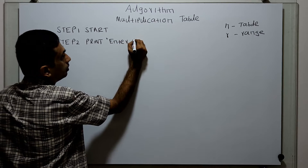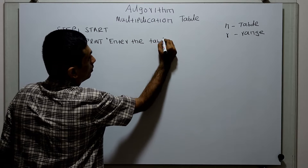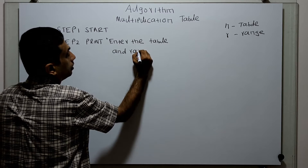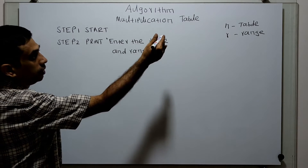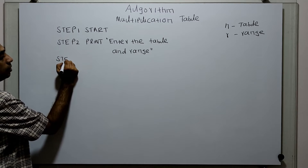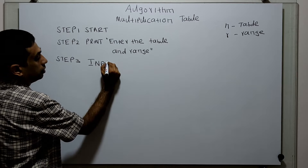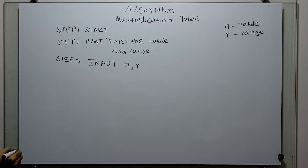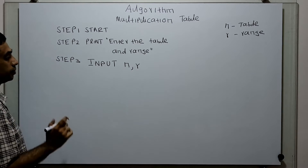Ask the user to enter the table and range. Step 3: input n comma r. Here n is for the table and r is for the range.